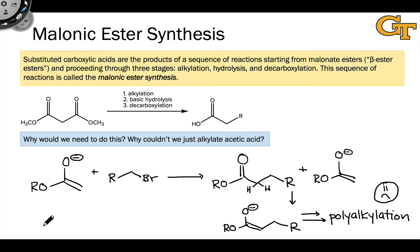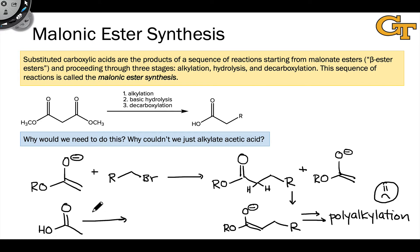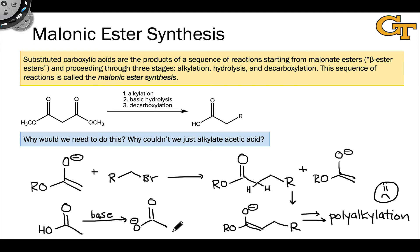Alkylating acetic acid itself is also generally out of the question, not only because of the possibility of polyalkylations, but also because when we treat a carboxylic acid with a base, the initial product is not the enolate but the carboxylate anion. It's the hydroxyl oxygen of a carboxylic acid that's the most acidic position.